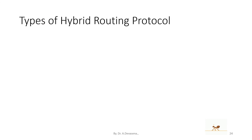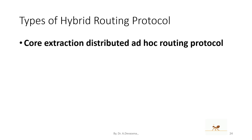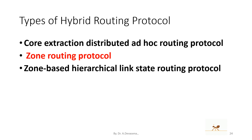Types of hybrid routing protocols are as follows: first is Core Extraction Distributed Ad Hoc Routing protocol (CEDAR); second is Zone Routing Protocol (ZRP); and third is Zone-Based Hierarchical Link State Routing Protocol (ZHLS).